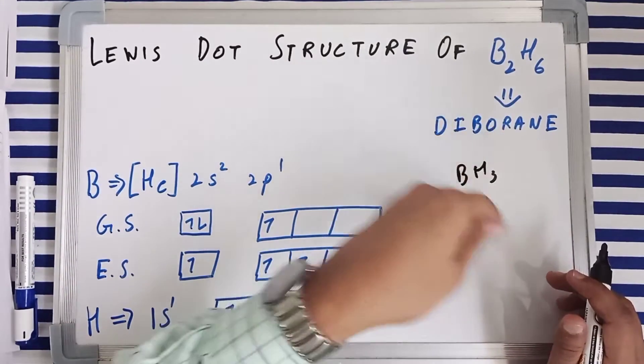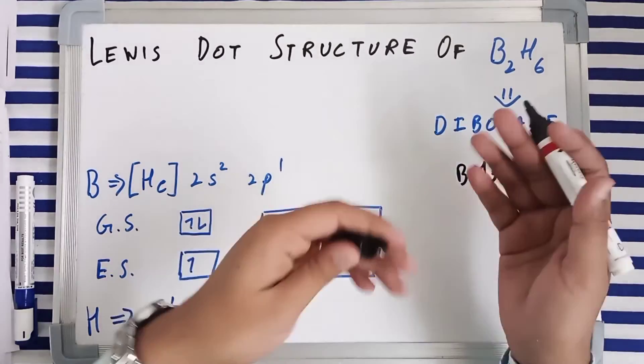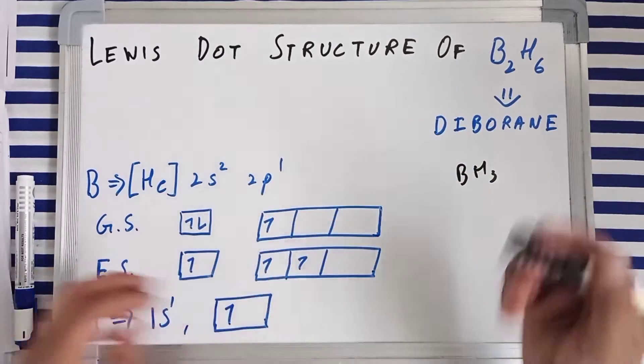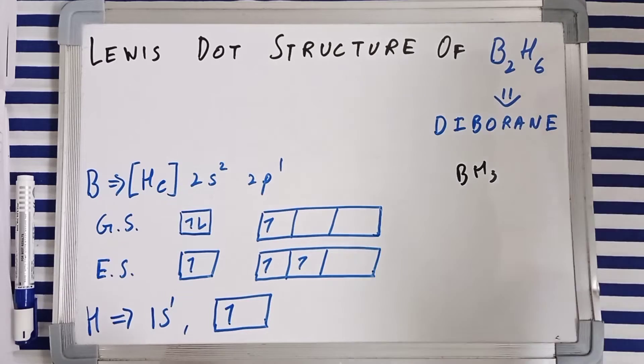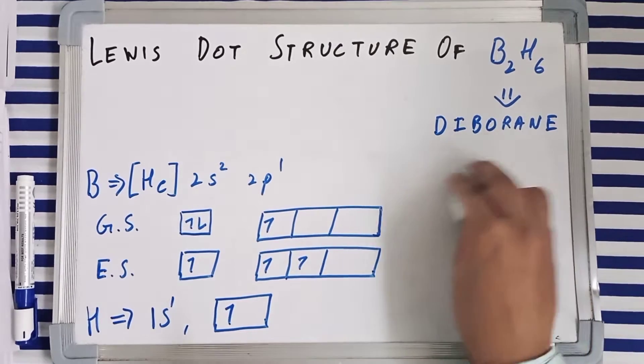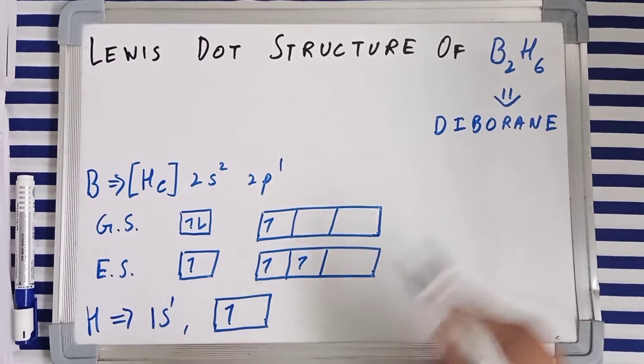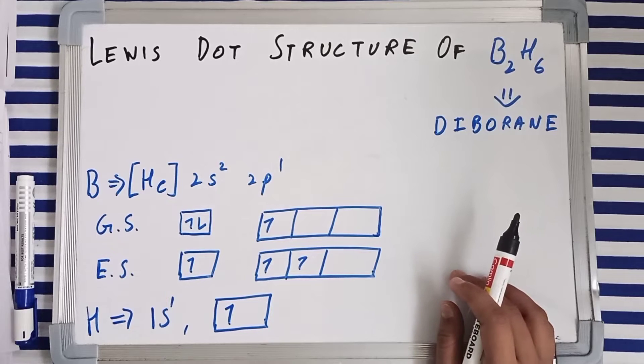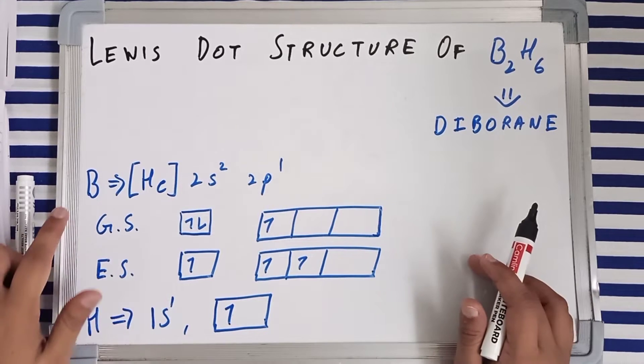We'll discuss the structural phenomena of BH3 and then we will discuss why B2H6 is special and what is banana bond in B2H6, because this is fairly complicated if you do not know the structure. So let's begin.